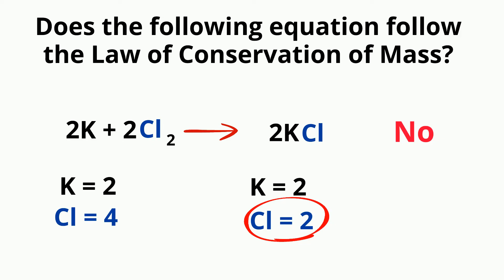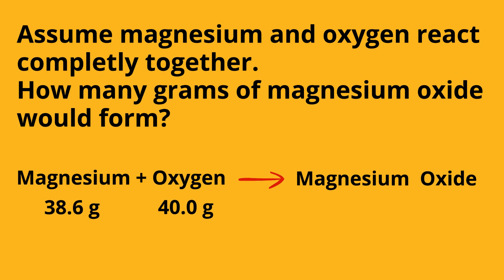A different type of problem: assume magnesium and oxygen react completely together. How many grams of magnesium oxide will form? Remember, the reactants and products are equal, so you just add the reactants — magnesium and oxygen — to give you the magnesium oxide, which is 78.6 grams.